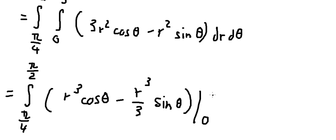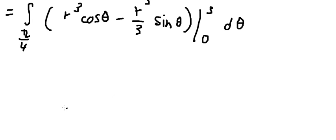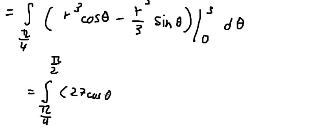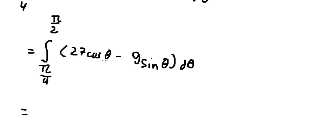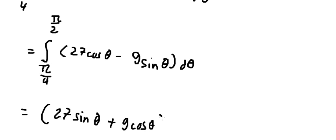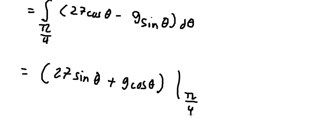We put in the bounds from 0 to 3. Substituting 3 and then 0, we simplify and get 27 cosine theta minus 9 sine theta. The integral of cosine theta is sine theta, plus 9 cosine theta, and we put the bounds from pi over 4 to pi over 2.